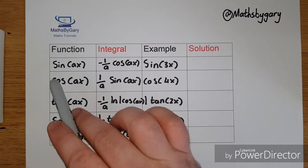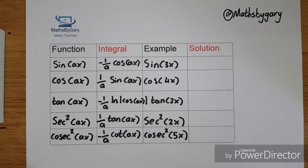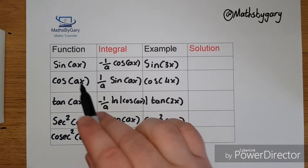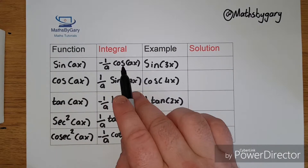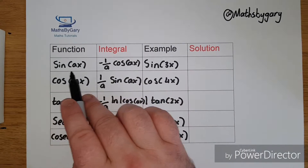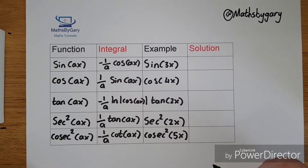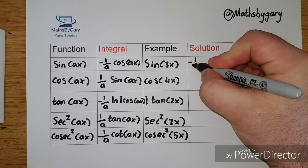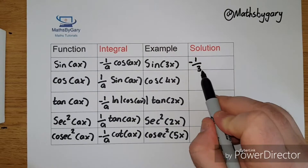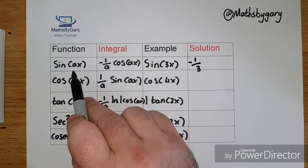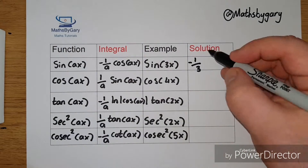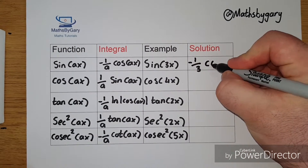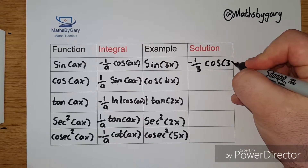We now move on to sin(ax). The integral of sin(ax) becomes minus 1 over a times cos(ax). The sin changes to cos and remember the negative is in there as well. So sin(3x) becomes minus 1 over 3 times cos(3x), plus c.